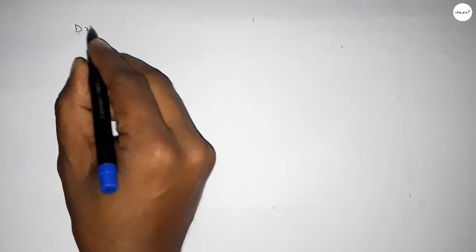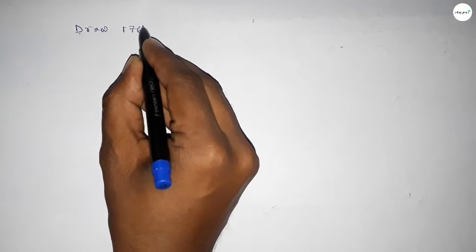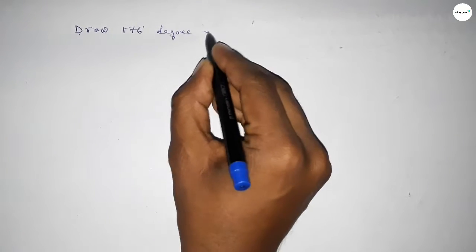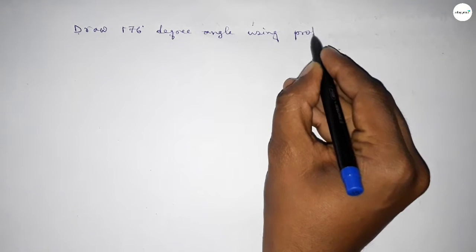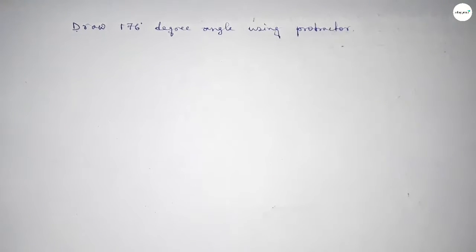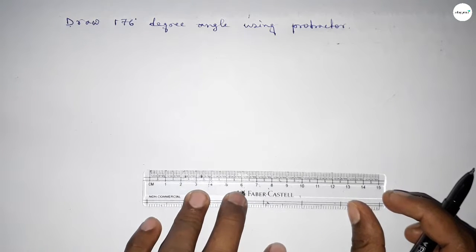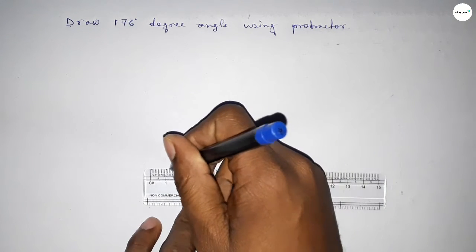Hi everyone, welcome to SI Share Classes. Today in this video we have to draw a 176-degree angle using a protractor. So let's start the video. First of all, we have to draw here a straight line of any length.